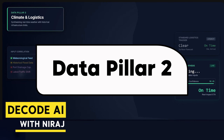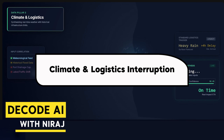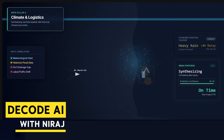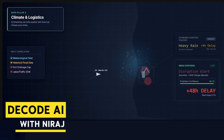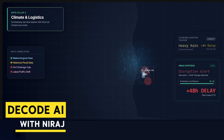Data Pillar Two: Climate and Logistic Interruption. Gen AI synthesizes real-time meteorological data, port congestion, and satellite data — moving beyond a simple weather forecast. It correlates predicted rainfall patterns with historical flooding data, port infrastructure capacity, and localized labor patterns to predict container arrival delays with higher accuracy than any standard logistics tracker.